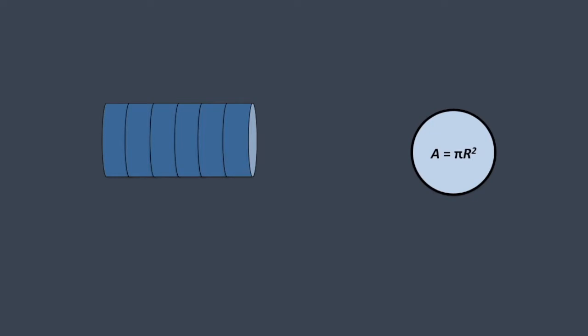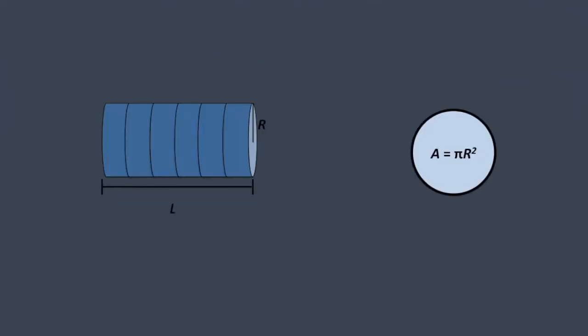The area of a circle is pi r squared — pi is approximately 3.14, and r is the radius, the distance from the center to the edge. You extend that circle over the length l of the cylinder. So the volume of a cylinder is pi r squared times l, because pi r squared is repeated throughout the length.